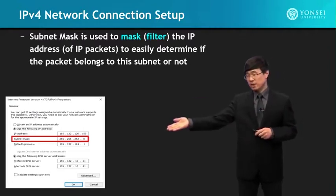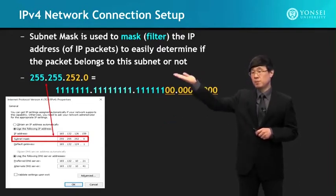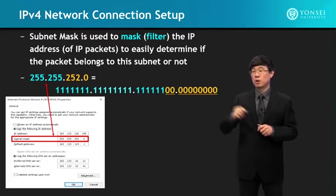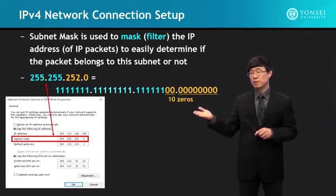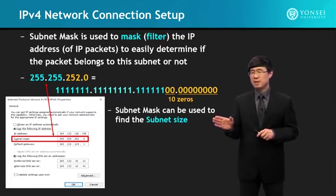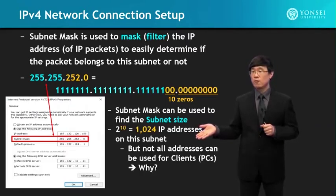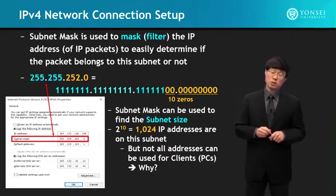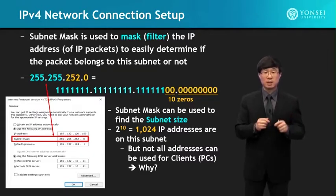For example, the subnet mask shown is 255.255.252.0. Converting that to binary, you can see a series of all ones and then zeros — there are 10 zeros in a sequence. The subnet mask can be used to find the subnet size. In this example, we have 10 zeros, so 2 to the power of 10 equals 1,024 — there are 1,024 IP addresses included in this subnet.